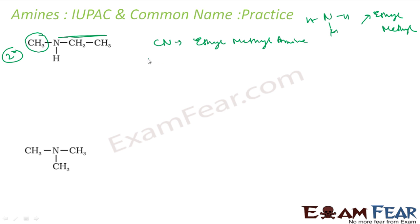To talk about the IUPAC name now, I have to find the longest chain — this is my longest chain with the carbon, it stops here. I should not include the other part; this is my longest chain. Now we see the CH3 is a substituent, and since it is attached to N, that is nitrogen, I will use the word N-methyl for this group.